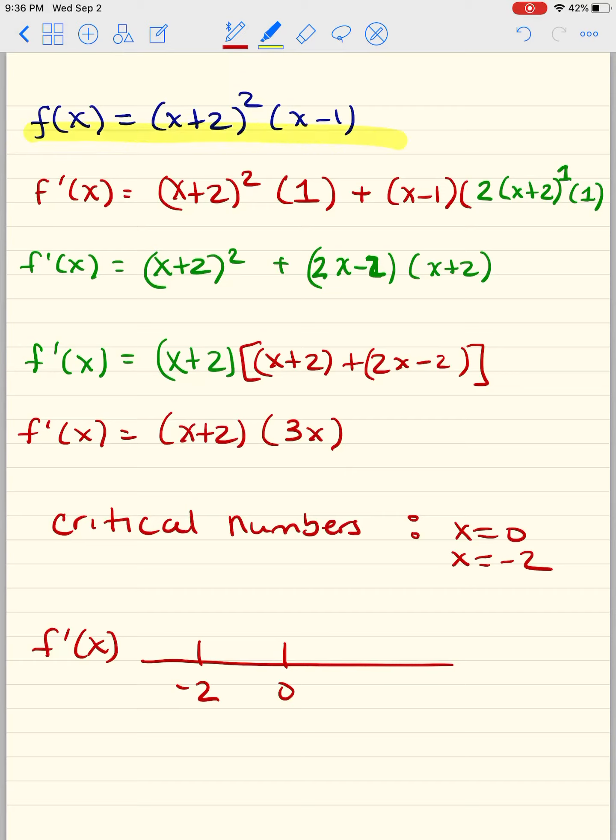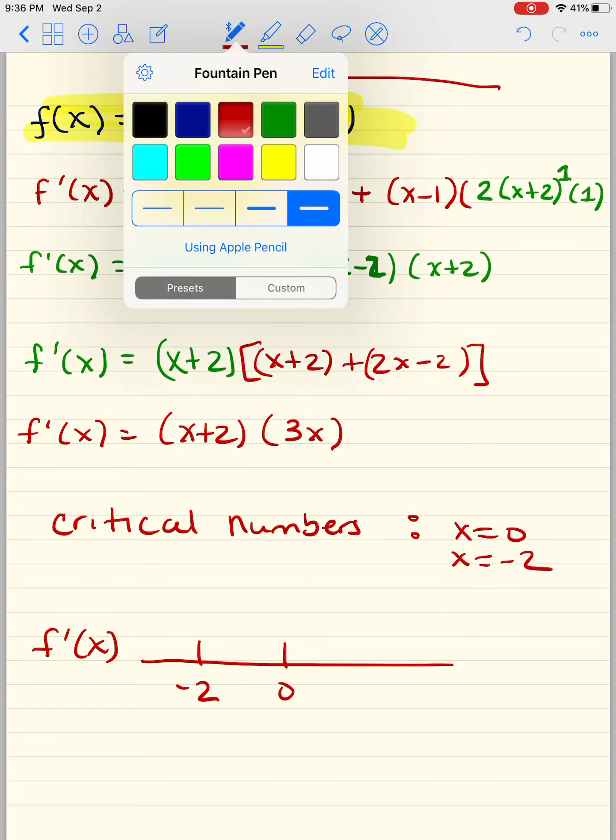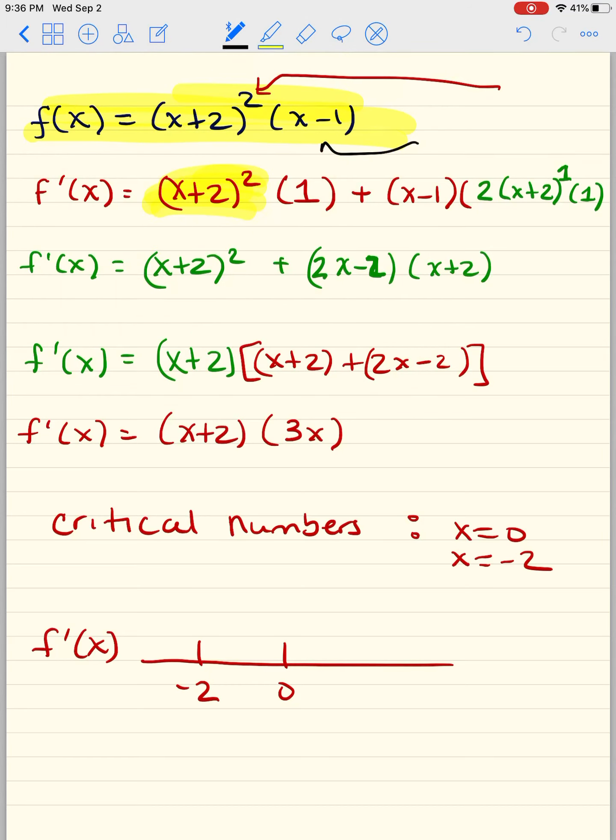Alright, so here's our function: x plus 2 squared times x minus 1. Now this is actually very important because to find the critical values for something that is being raised to a power, let me teach you how to do that. So first we understand that it's a product rule, right? So we are going to keep the first and then we're going to take the derivative of the second, which is this person right here. That's just 1.